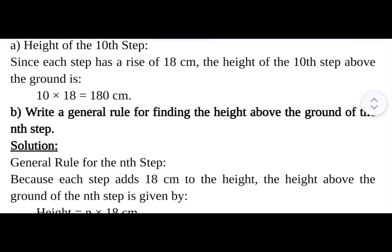Question 2: Write a general rule for finding the height above the ground of the nth step. General rule for the nth step: Because each step adds 18 centimeters to the height, the height above the ground of the nth step is given by n × 18 centimeters.